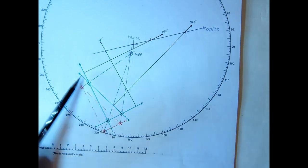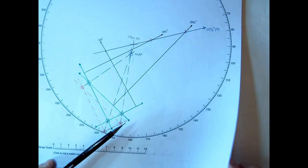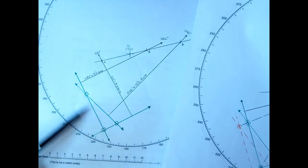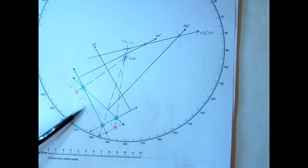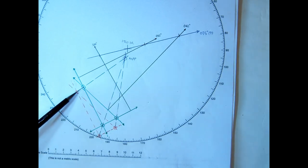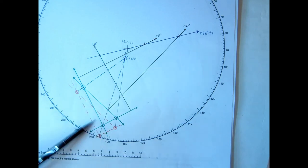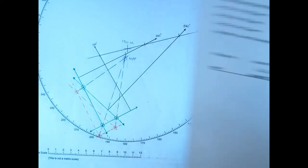So the initial one was in green, as we saw there. And then the bearings are all, or the intercepts are all plotted away. And then we draw the three lines and that gives us our MPP.